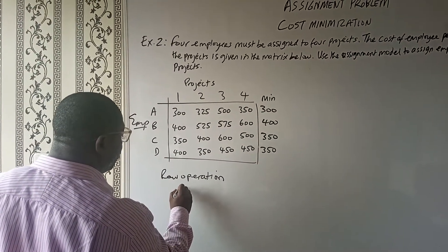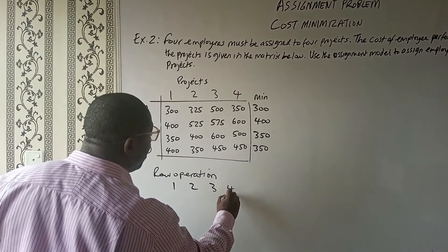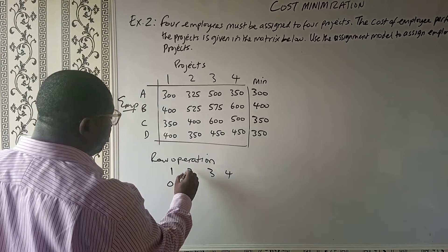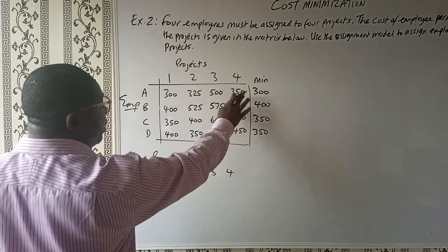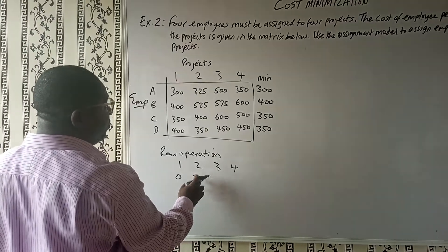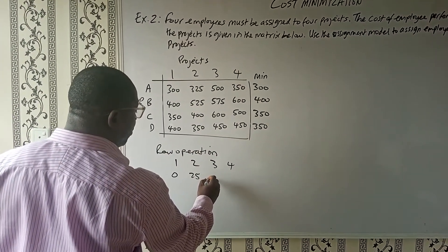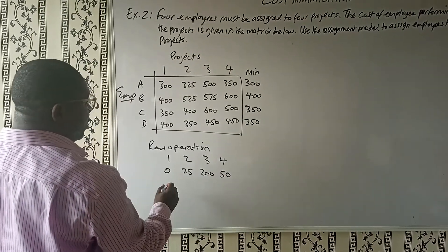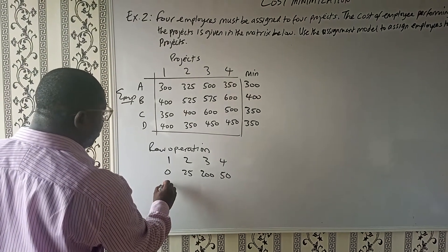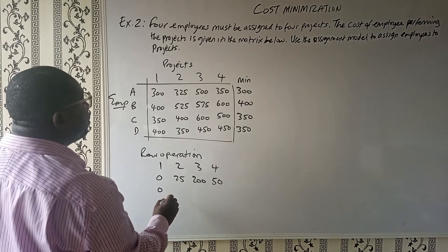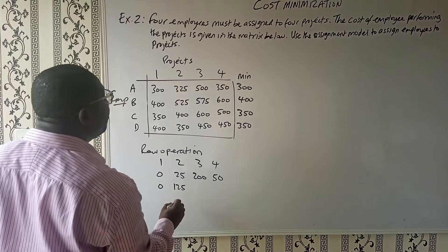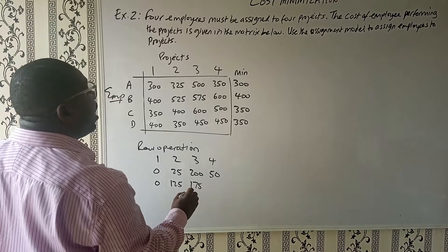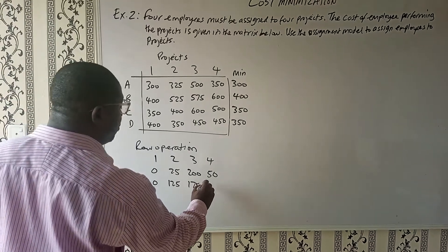I'm going to repeat my columns. For row 1: 300 minus 300 gives 0; 320 minus 300 gives 25; 500 minus 300 gives 200; and the next gives 50. For row 2: 400 minus 400 gives 0; 525 minus 400 gives 125; 575 minus 400 gives 175; and 600 minus 400 gives 200.